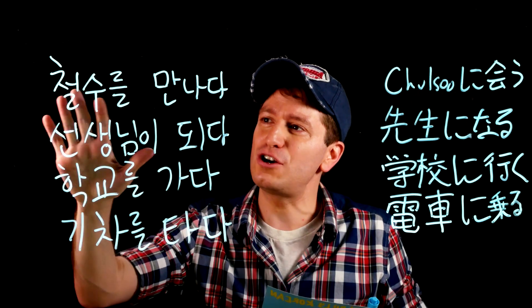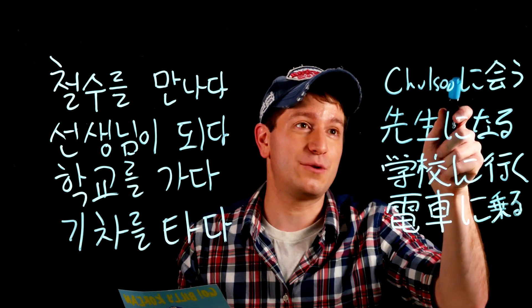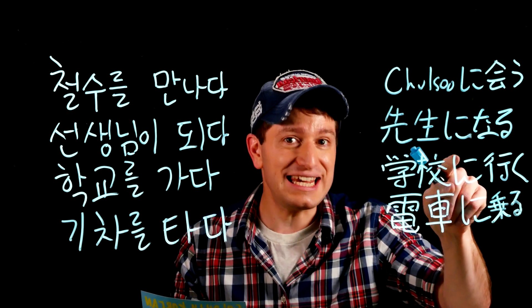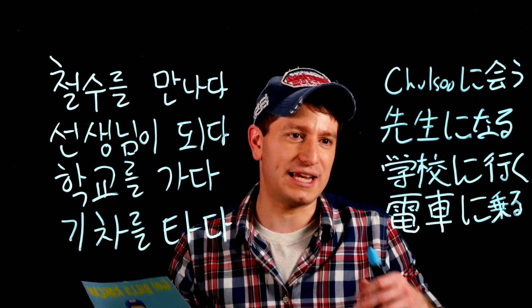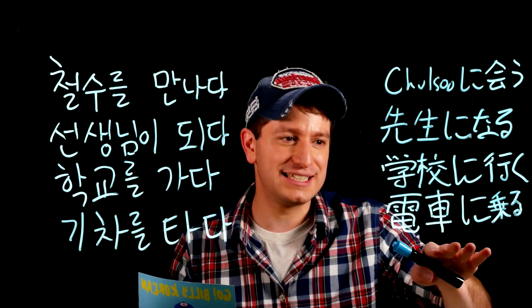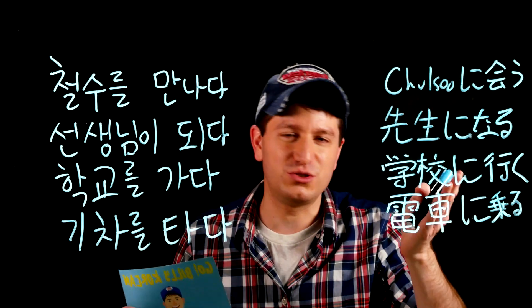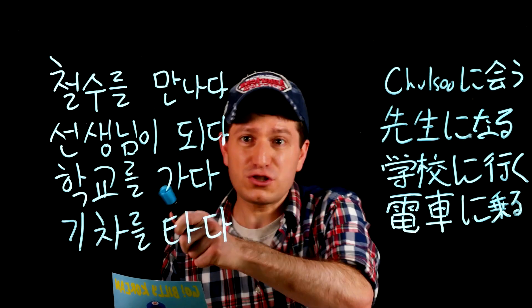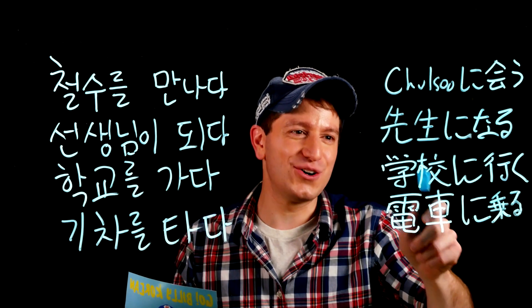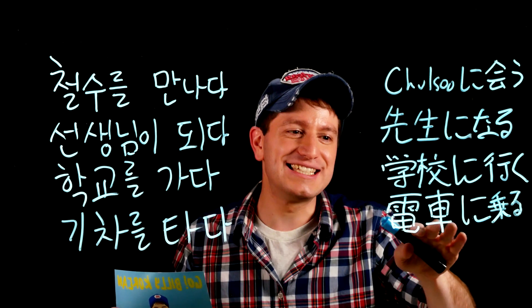There are also many cases where you might use the subject marker or even the object marker in Korean, whereas in Japanese you would use a different particle, に, which is kind of equivalent to the Korean 에 particle. For example: 찰수를 만나다 — to meet 찰수 — in Japanese uses に with 会う. 선생님이 되다 — to become a teacher — in Japanese is 先生になる. 학교를 가다 — to go to school — is 学校に行く. 기차를 타다 — to ride a train — is 電車に乗る. Notice how Korean uses the object marker here and Japanese uses に. So people learning Korean first often make mistakes like using は or が where に would be correct in Japanese.